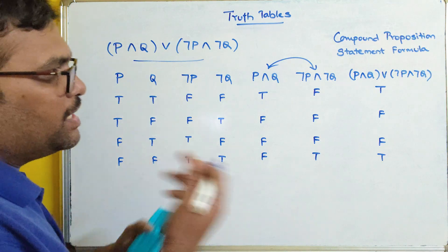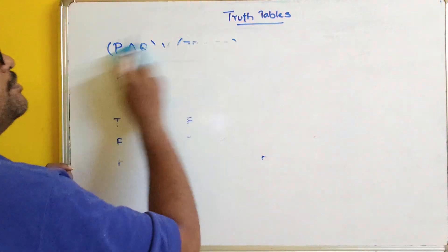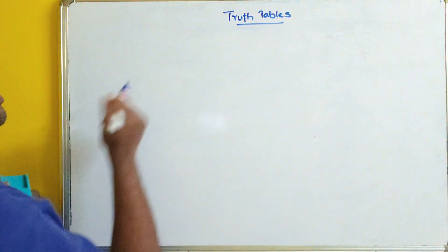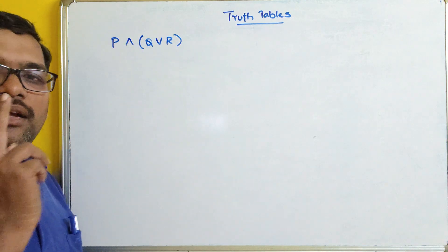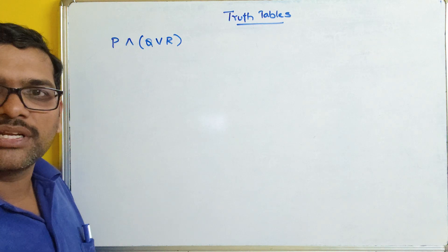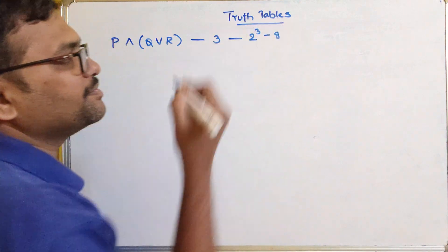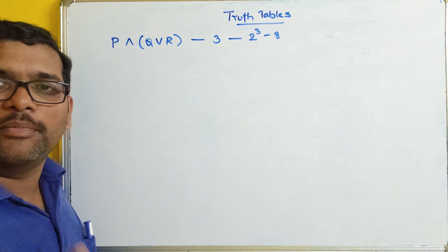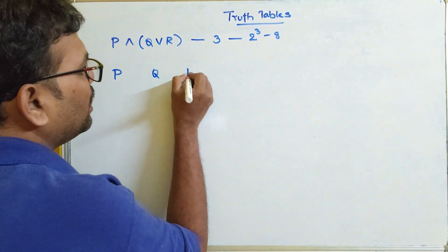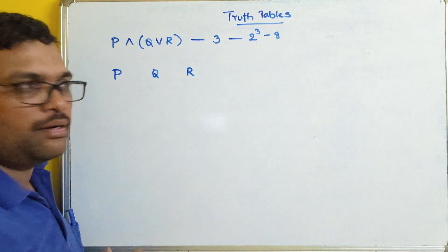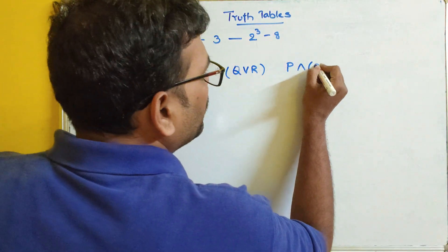Let us take one more example: P ∧ (Q ∨ R). How many propositions are there? Three. So the combinations will be 2 power 3, which is 8. We write columns for P, Q, R, then Q ∨ R, and finally P ∧ (Q ∨ R).